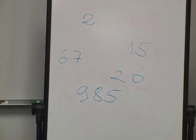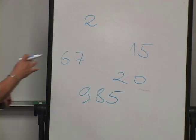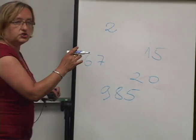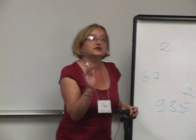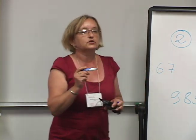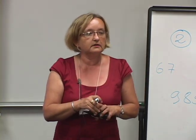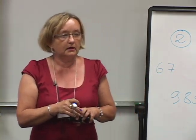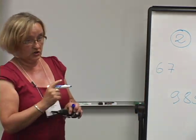A participant asks: 'How many children do you have?' choosing number 985. The answer: I have two children — two daughters in fact. This demonstrates how all participants are engaged through a meaningful context for interaction.